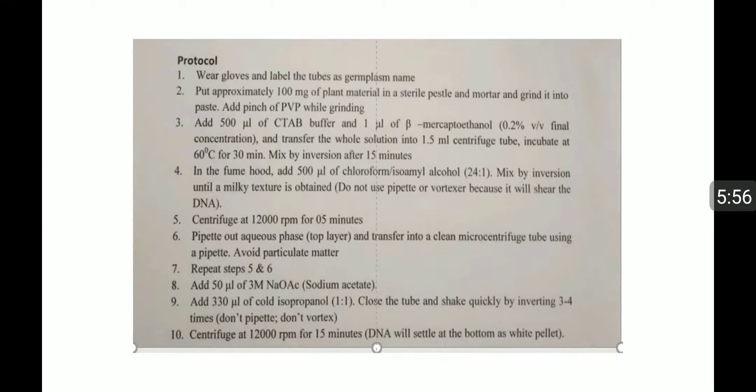As I said, the procedure and protocols: approximately 100 mg of plant material is selected and crushed, add PVP while grinding, add 500 microliters of CTAB buffer and 5 microliters of beta-mercaptoethanol, and transfer the solution into a 1.5 ml centrifuge tube and incubate for 30 minutes at 60 degrees Celsius in boiling water.